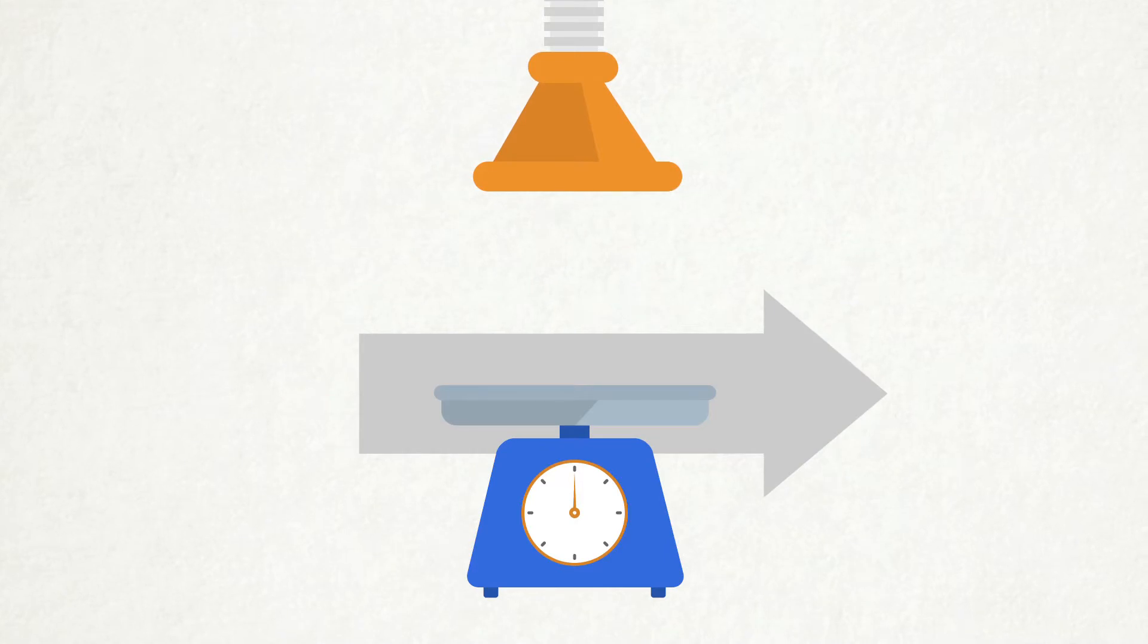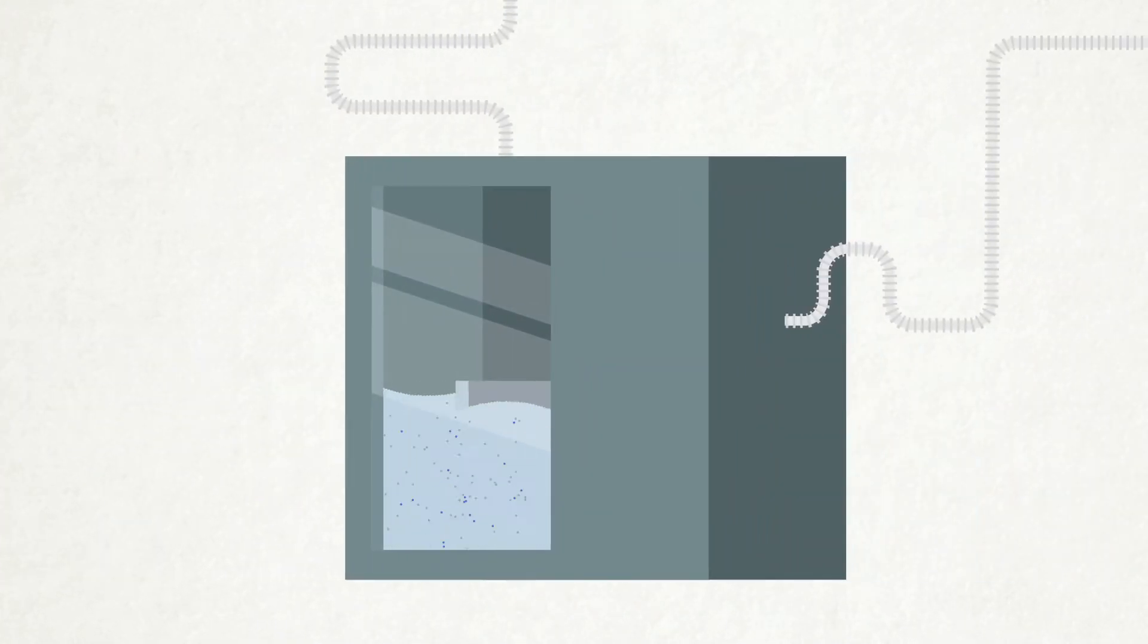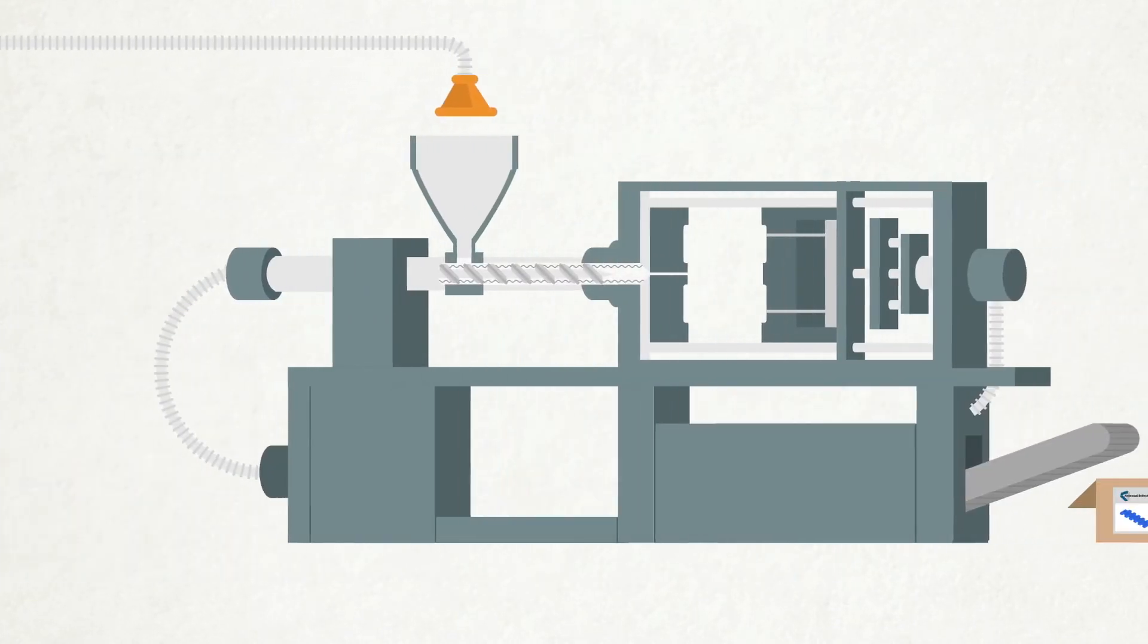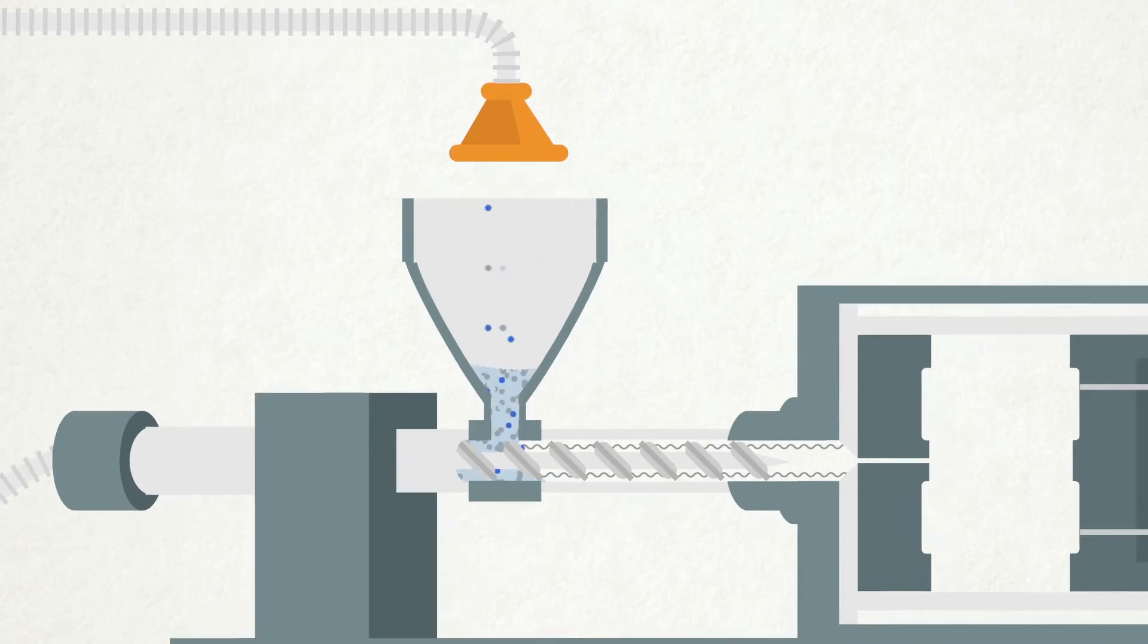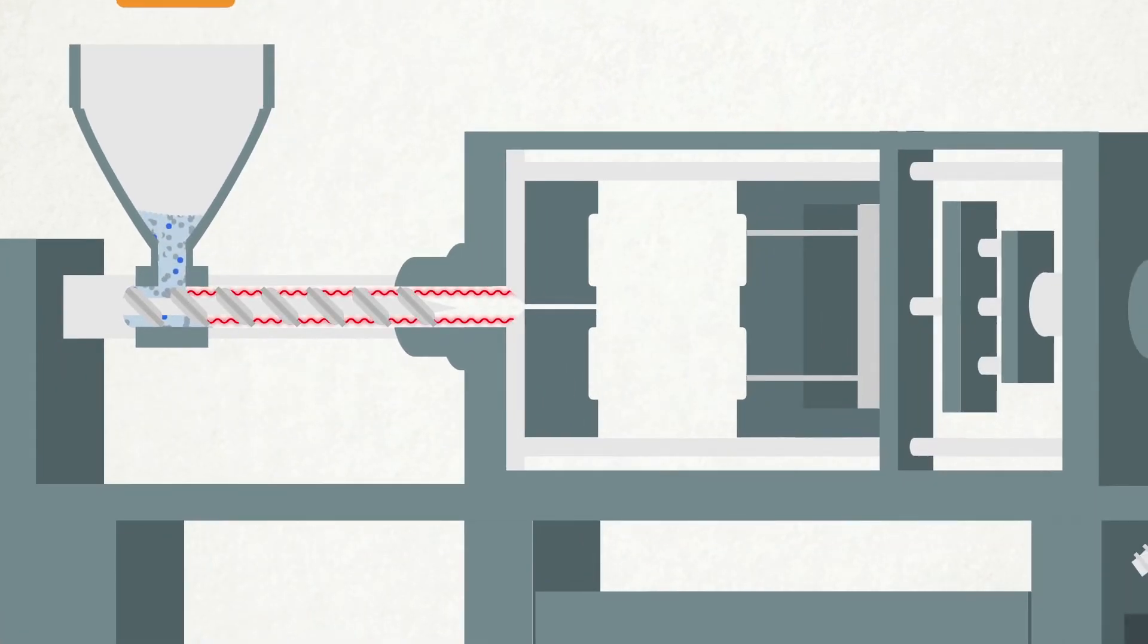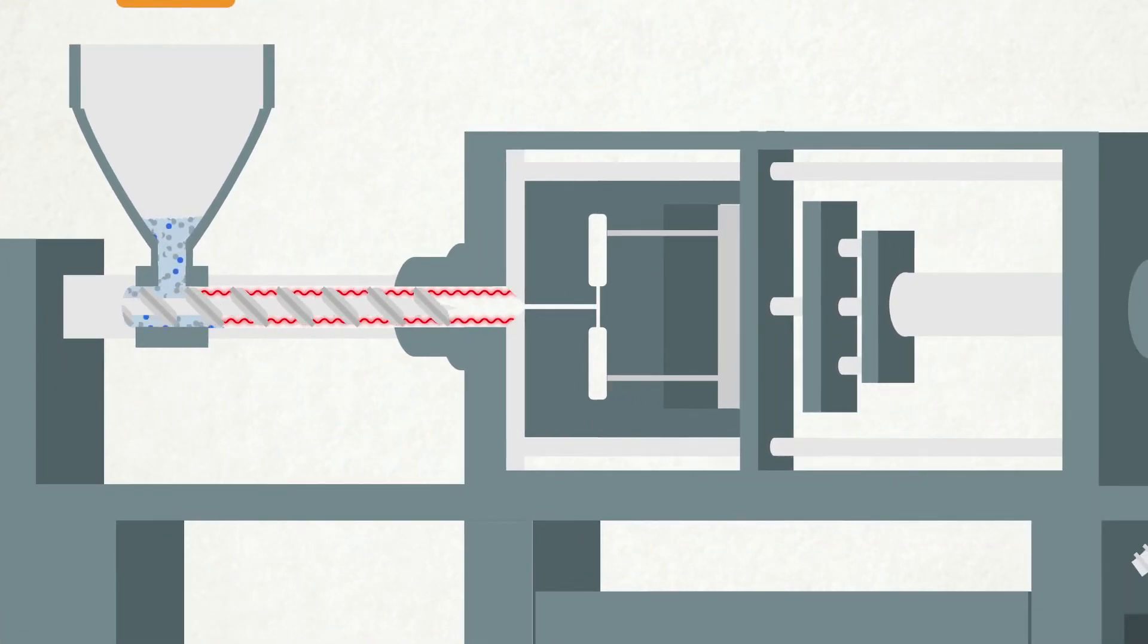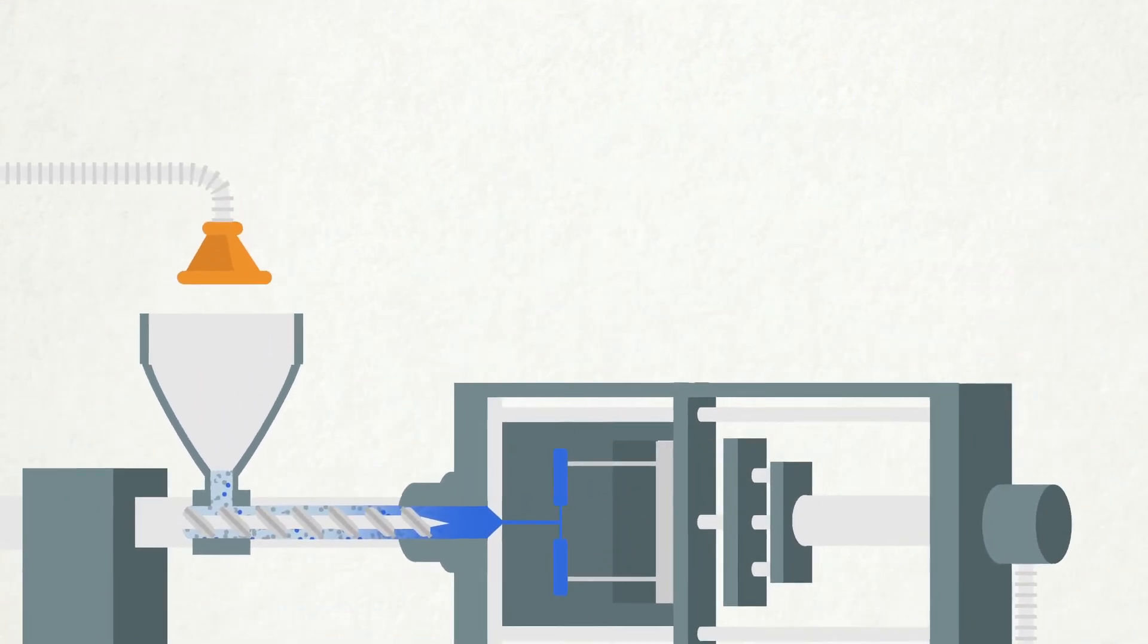This composition then passes through a mixing machine before being transferred into a molding machine. In the molding machine, heaters melt the mix in a process called plastification. A precise amount of this liquid plastic is then injected into a closed form, also called a tool.